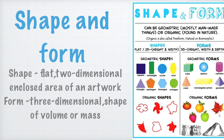Form is a shape of volume or mass. It is three-dimensional, meaning it has height, width, and depth. It can be geometric like cube, sphere, cylinder, and cone, and it can also be organic. Organic forms are found in nature, like vegetables, fruits, mountains, and animals.